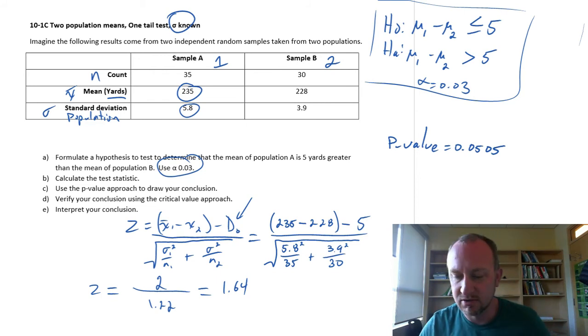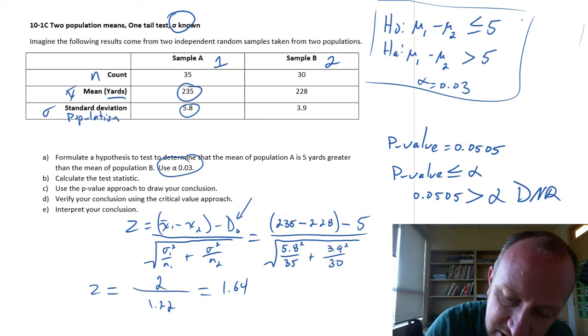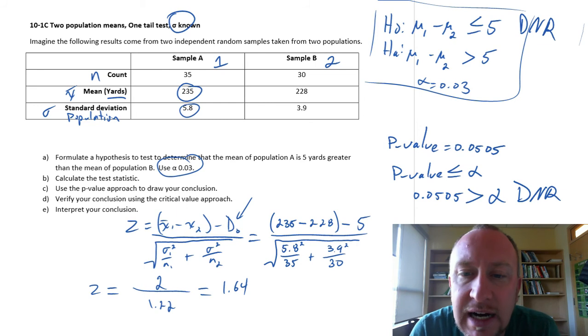And do we have evidence to reject? Well, that rejection rule is if it's less than or equal to alpha. In this case, 0.0505 is greater than alpha. So we do not reject. I do not have sufficient evidence to support the alternative hypotheses. So I'm unable to say that the difference in the average of these two samples is greater than 5.